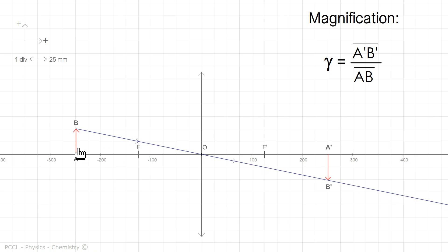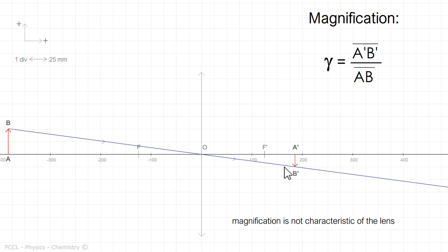I can show you a smaller image, because the image is not always bigger, it depends. And here, for example, the image is twice as small. I write that gamma, in this situation, is worth negative 1 half. The magnification is therefore not characteristic of the lens, since for the same lens, we obtained three different magnifications.